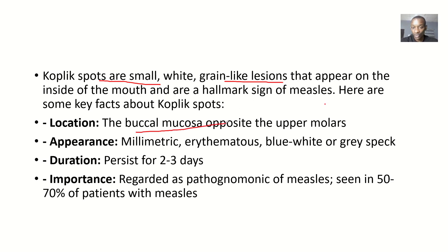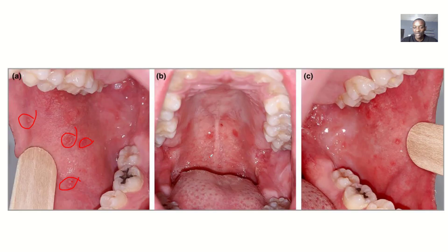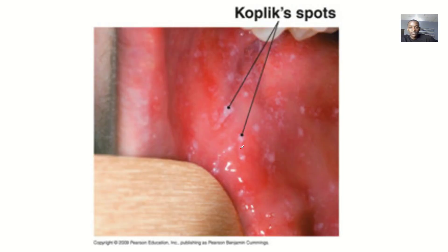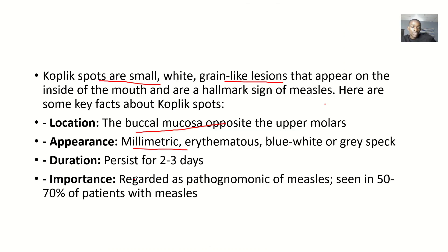They are mostly found in the buccal mucosa opposite to the upper molar tooth — that's where you must find them, though they can spread. That's basically where they start. In terms of appearance, they are millimetric, erythematous, and their color could be blue-white or gray specks. This one here is kind of gray.